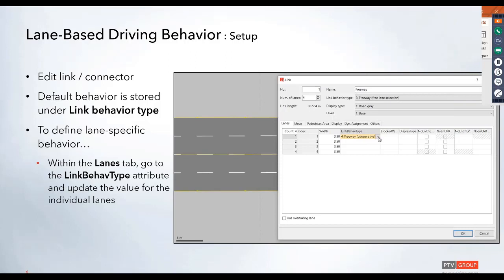For each of the individual lanes, you can just select this drop down and choose those link behaviors that were just defined. Any of these lanes that are just left blank will just reference that default link behavior type that was defined up above.